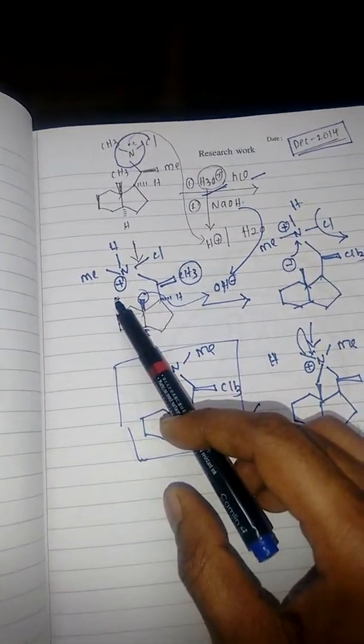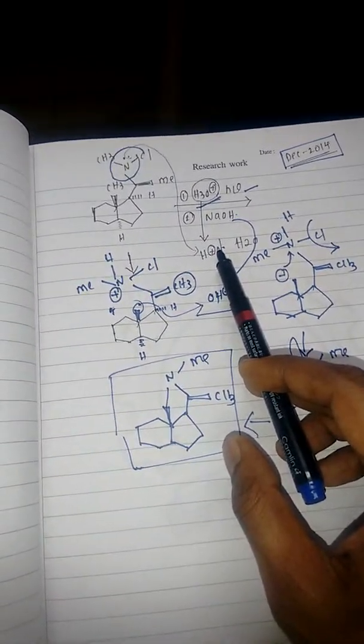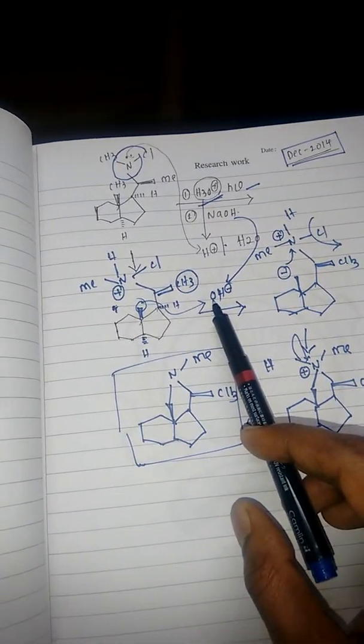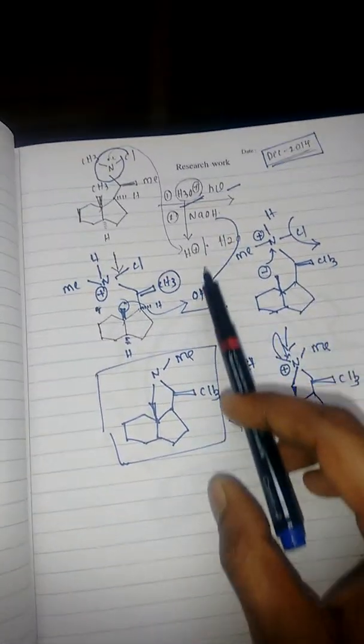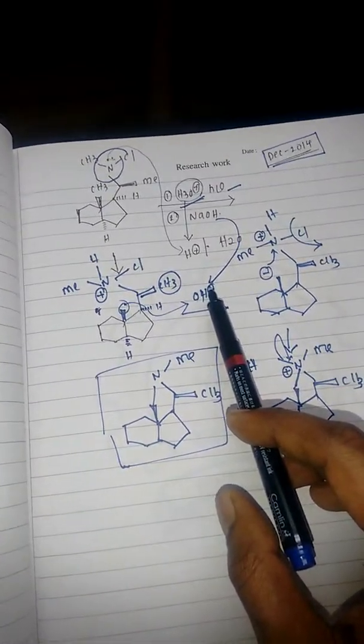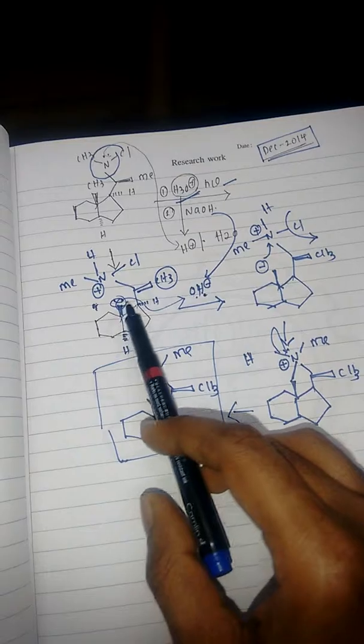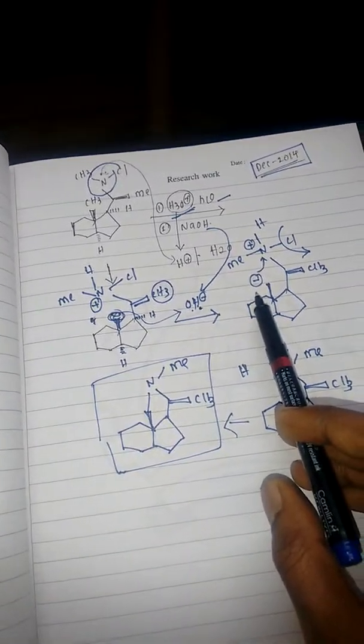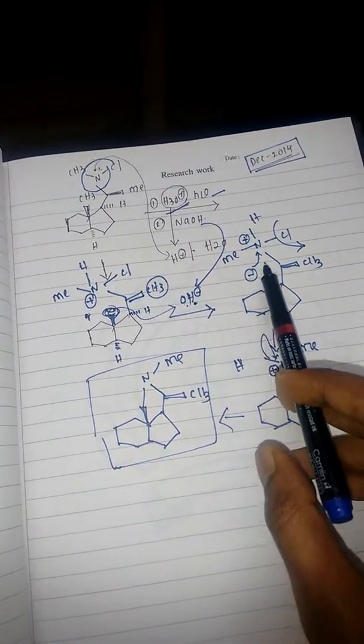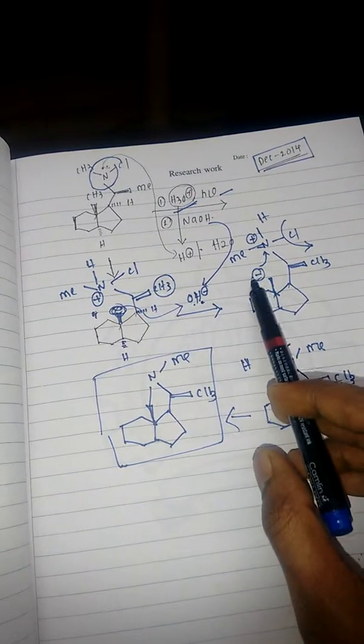Then the second step, there is OH- coming from NaOH. This OH- will abstract the proton from this methyl group, so we get CH2-. Then there is a positive and negative charge, they are very close to each other, there is formation of a new bond, so you will get this compound.